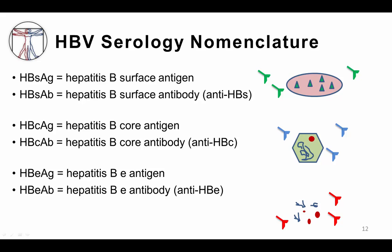Finally, hepatitis B E antigen is abbreviated HBeAg. These antigens are formed by the proteolytic processing of the viral core, and antibodies against these proteins are called hepatitis B E antibodies, abbreviated HBeAb or anti-HBe. This can all get a little confusing, but once you get used to seeing and writing these abbreviations, it gets a lot easier.